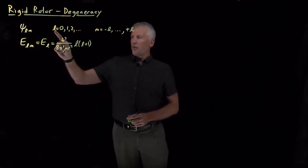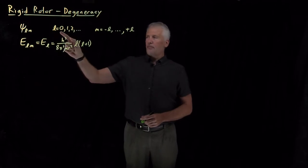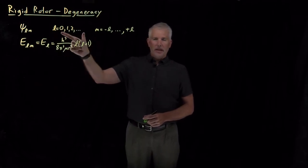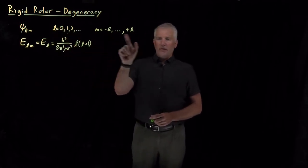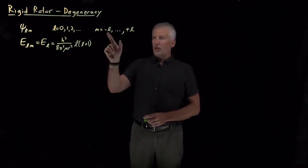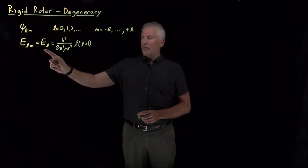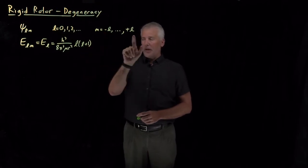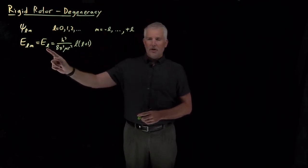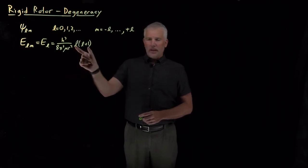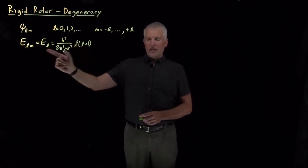For any particular wave function with quantum number L, which must be some non-negative integer, there's a variety of different values of M that are also possible. The energy doesn't depend on the value of M. Any of these allowed values of M has the same energy. If we know the value of L, we can calculate L times L plus 1 and use that to get this energy.